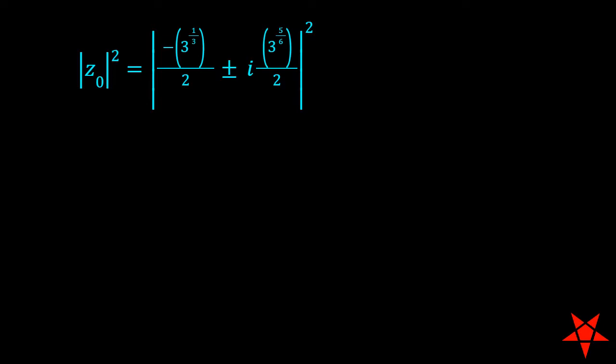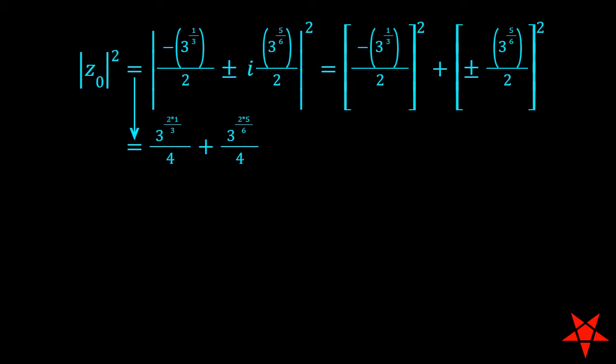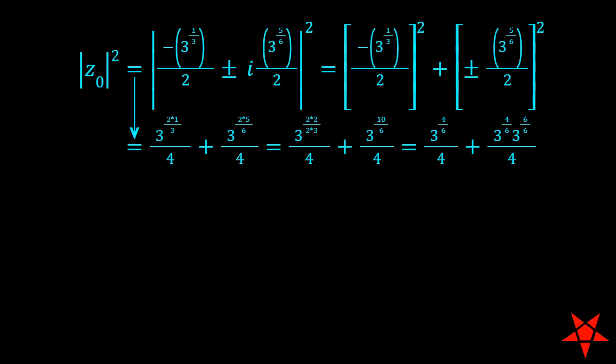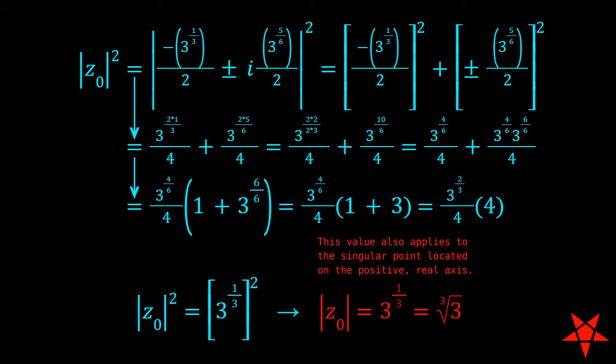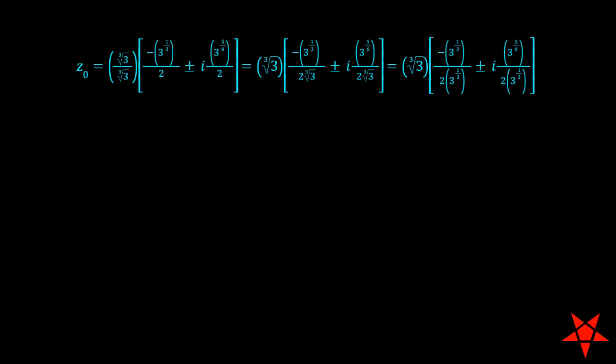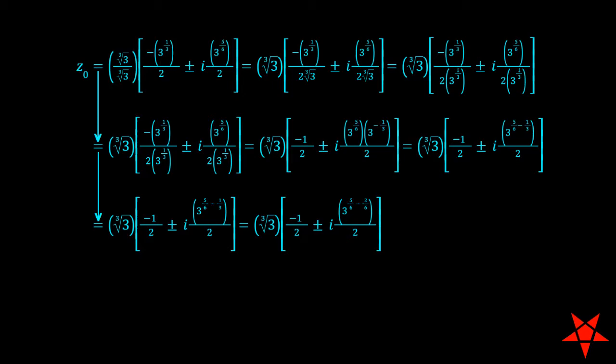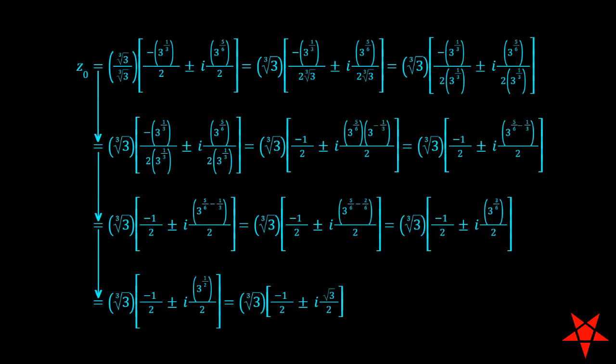Calculation of the magnitude is easier to follow if we start by crunching the square of the magnitude, which is the sum of the squares of the terms. Manipulating the exponents in each term allows us to factor out an exponent of 3, and before you know it, the 4 drops out and we're left with the square of 3 to the 1 third, or absolute value of z0 equals the cube root of 3, for both complex points. This also happens to be the magnitude of the singular point at z0 equals the cube root of 3. Factoring out the magnitude from these points and simplifying all of the exponents of 3, as well as the fractions in those exponents, gives us cube root of 3 times a unit vector equal to minus 1 half plus or minus i root 3 over 2.